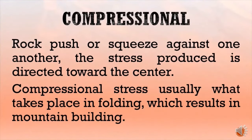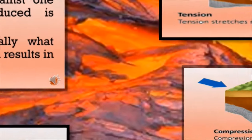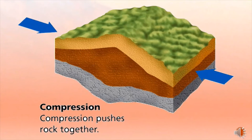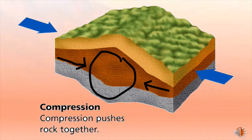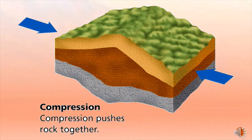The first is compressional stress, where rocks push or squeeze against one another and the stress is directed toward the center. When these rocks meet, the orientation can be either horizontal or vertical. Horizontally, the crust may thicken or shorten; vertically, the crust can thin out or break off. That's why compressional stress usually takes place in folding, which results in mountain building. As shown in the diagram, stress on both sides is directed toward the center, producing mountains or volcanoes.